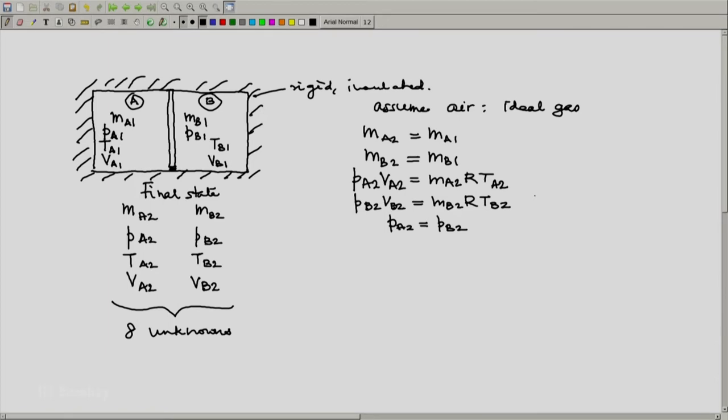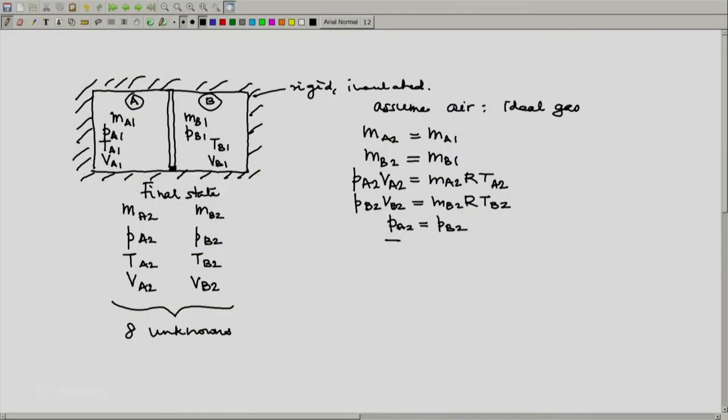Then we are told that the piston is diathermic. So it will not tolerate any temperature differences on either side. And hence we will have TA2 equal to TB2. Six equations.